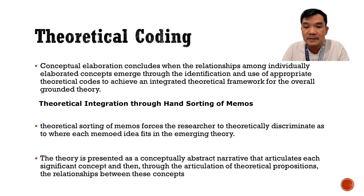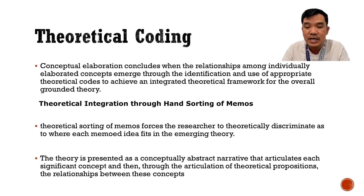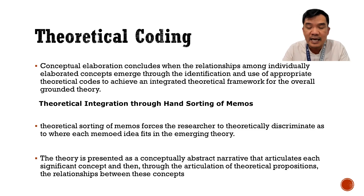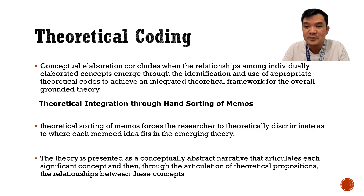When we are doing substantive theory, we are initially defining the relationship between concepts or categories. At the theoretical level, we are now integrating those various categories that emerge from data. Our target is to present the theory or the entire relationship of various categories derived from data. This would be the final coding part. The theoretical codes are sometimes used as a guide to determine the various relationships of major categories. One process that will help us is the theoretical integration and hand sorting of memos, which forces the researcher to theoretically discriminate as to where each memo idea fits in the emerging theory.